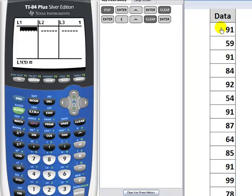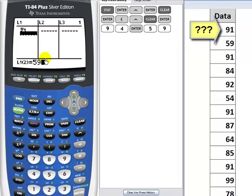Now we're going to enter the data that you see over here on the right side. So we start by pressing 9, 1, Enter. 91 is the first number in list 1. The calculator is now waiting for the second. That's going to be 5, 9, Enter.